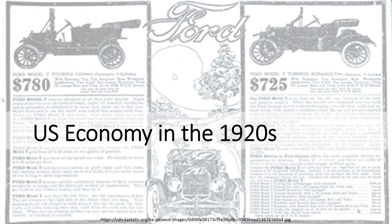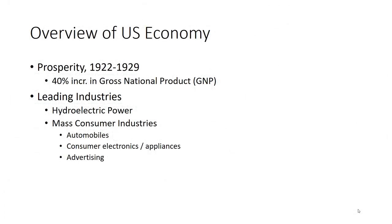Let's begin with an overview of the US economy in the 1920s. After a short but sharp depression in 1921 and 1922, prosperity prevailed in most of the US economy. Overall, the gross domestic product rose by 40% between 1922 and 1929, with leading industries being hydroelectric power providing cheap energy to drive the rest of the economy, and mass consumer industries.